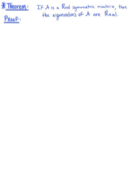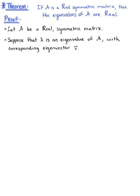Here is our next theorem: if matrix A is a real symmetric matrix, then the eigenvalues of matrix A are real. Let's go ahead and verify that this statement is in fact true. We let A be a real symmetric matrix and suppose that lambda is an eigenvalue of matrix A with corresponding eigenvector v. Then by definition, we have A times v equal to lambda times v — our eigenvalue equation.